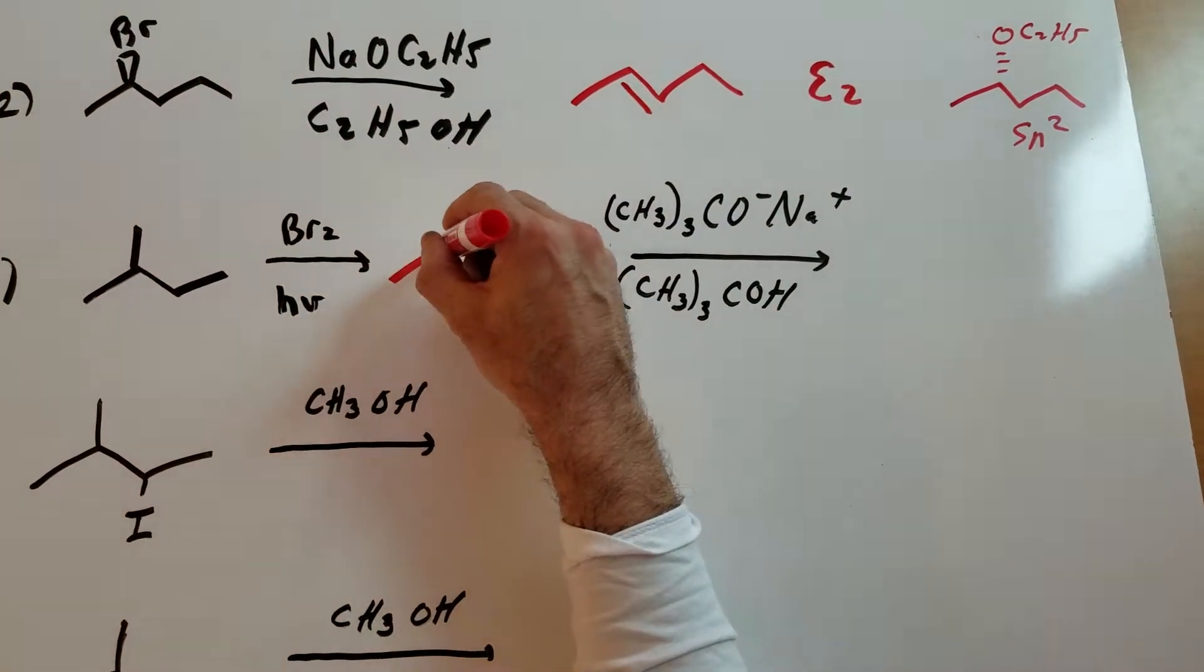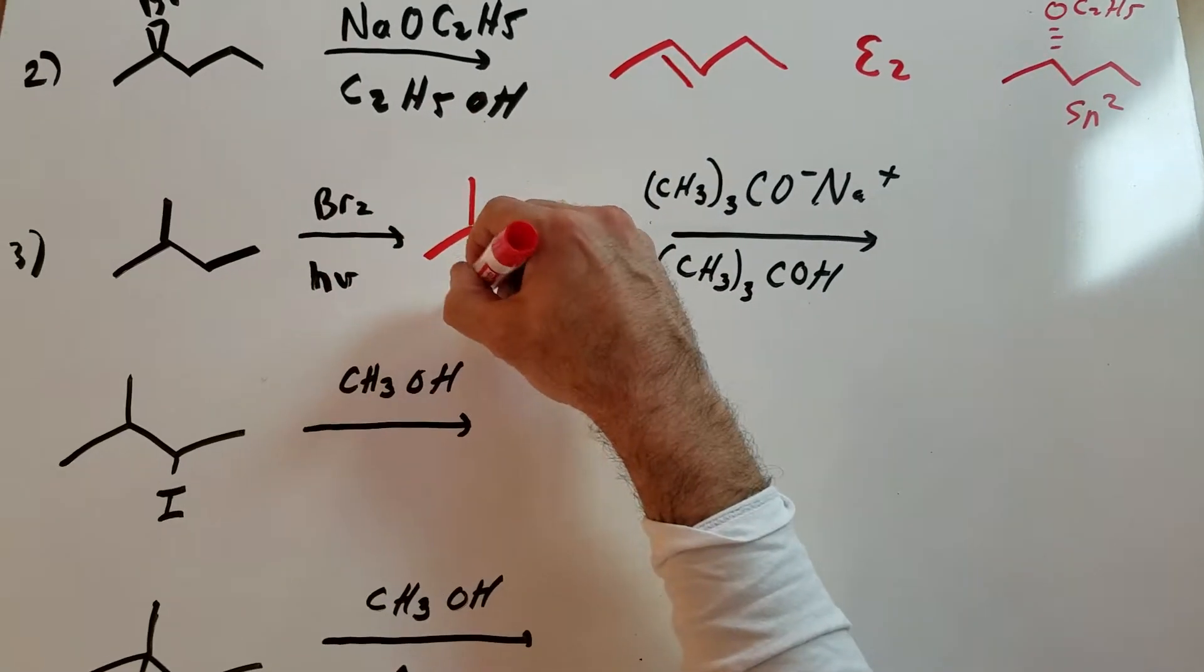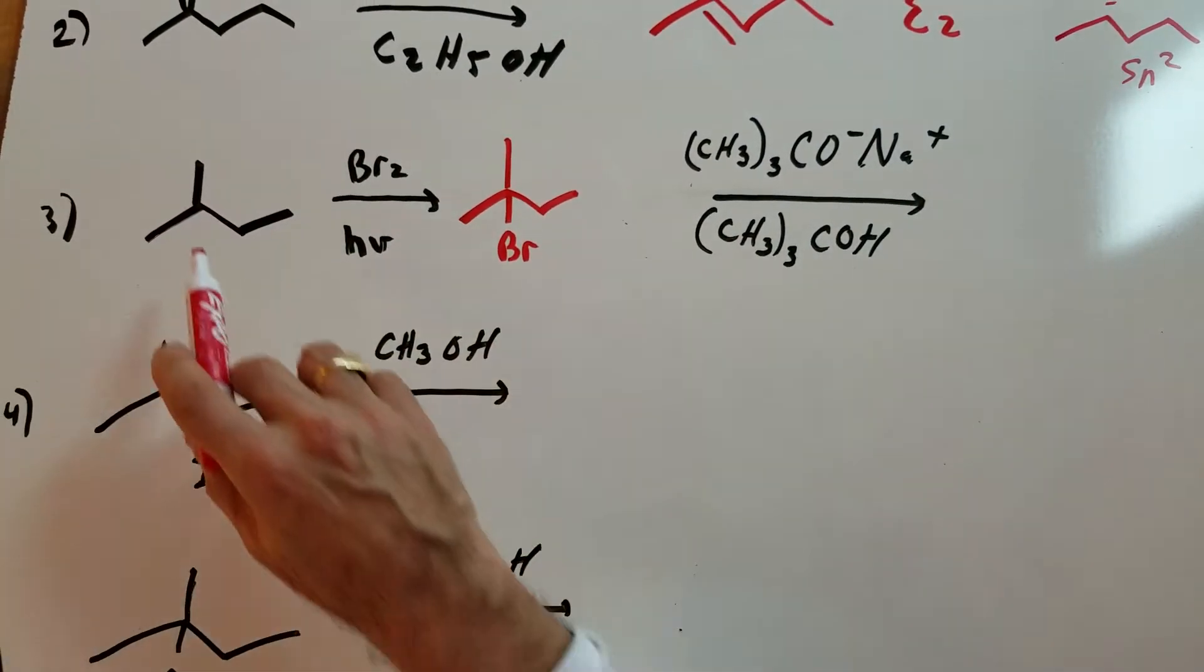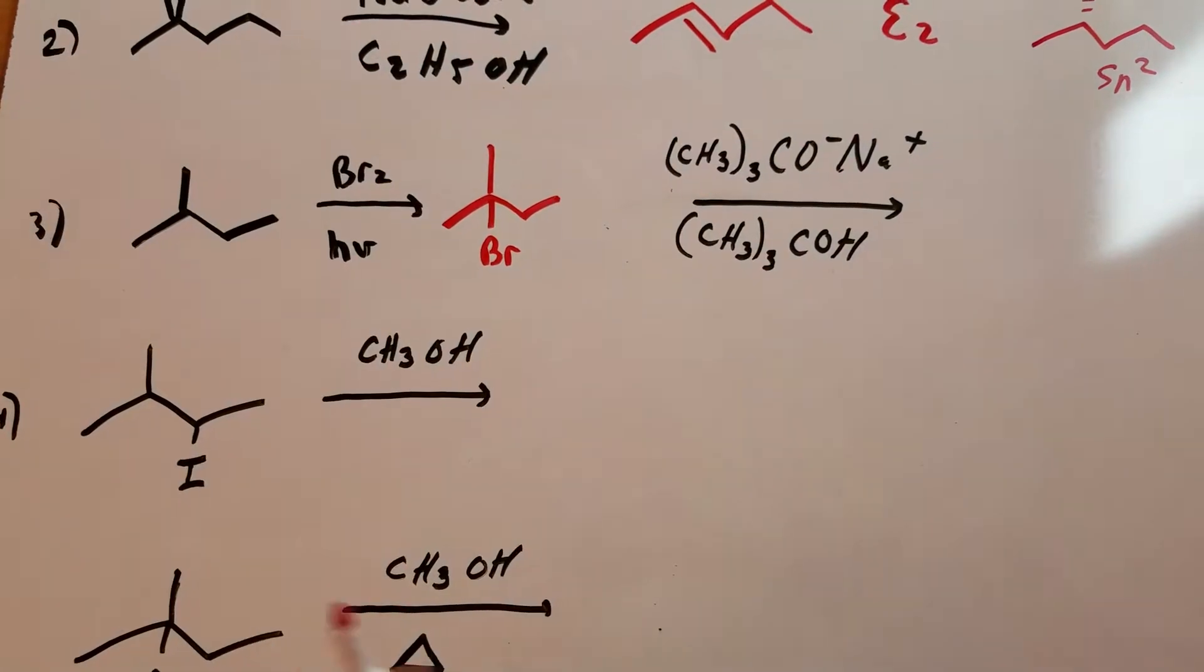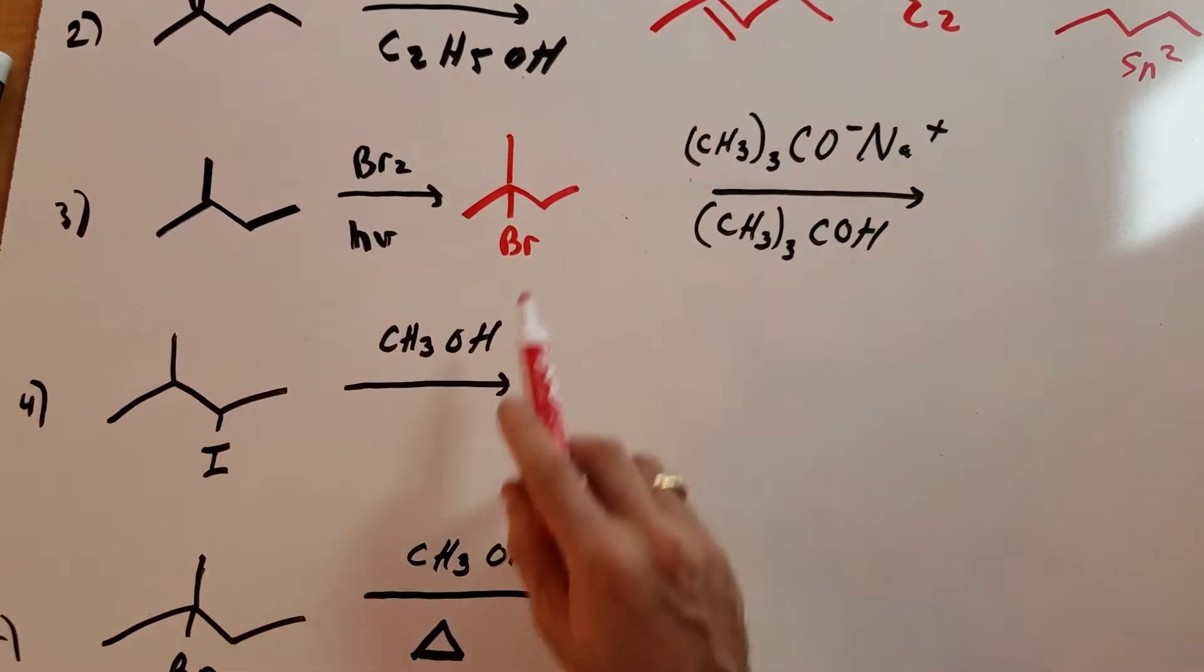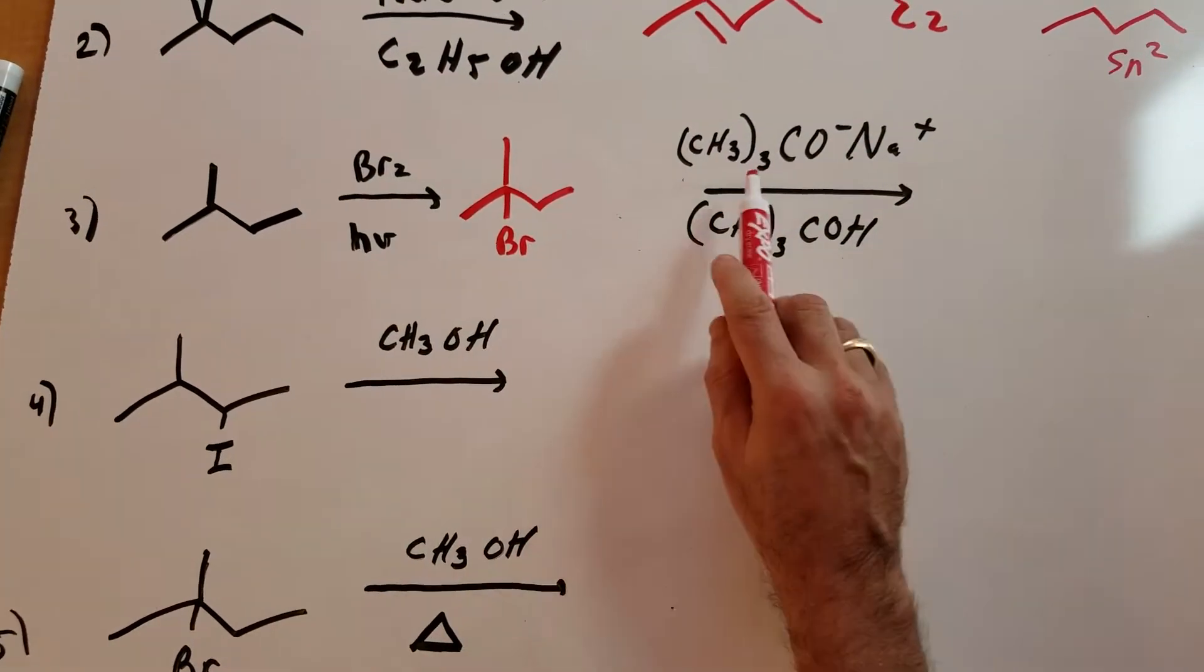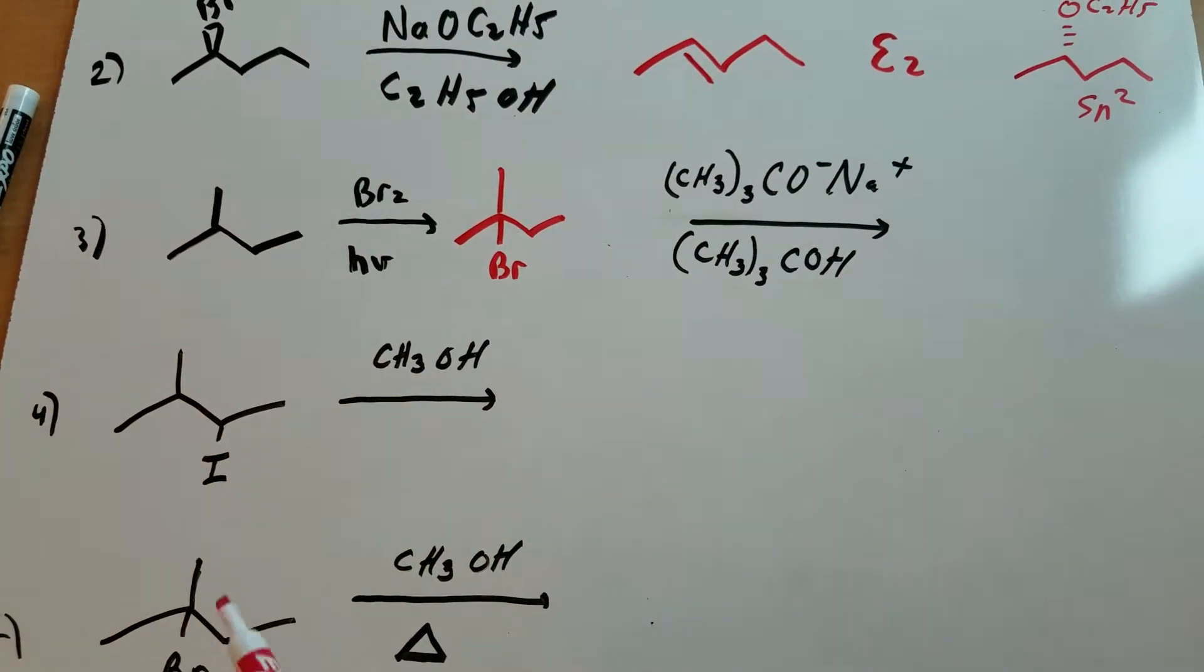So what we're going to do in this example is we are going to do a radical mechanism in which we replace the tertiary hydrogen preferentially over all the other hydrogens and put in a bromine. Now focus on this base. It's gigantic. It's called sodium t-butoxide, and therefore it's going to remove the bromine.